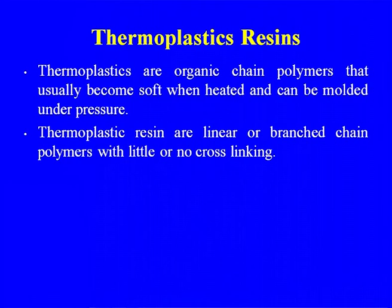Now let us discuss the two major classifications in case of plastics: thermoplastics and thermoset plastics. Thermoplastics are organic chain polymers that usually become soft when heated and can be molded under pressure. Thermoplastic resins are linear or branched chain polymers with little or no cross-linking. Major thermoplastics we use include polyethylene, polypropylene, PVC, and some synthetic fibers also fall in the category of thermoplastics.